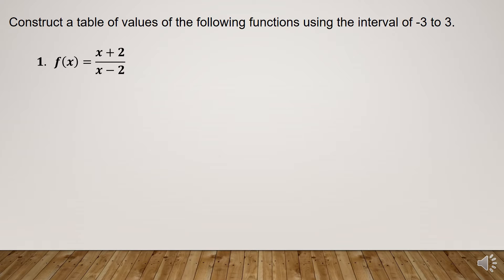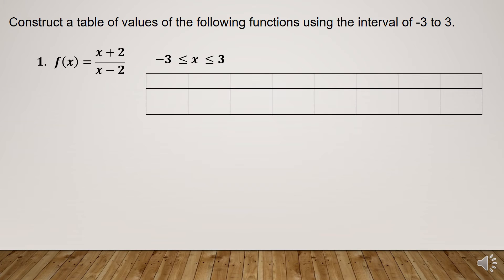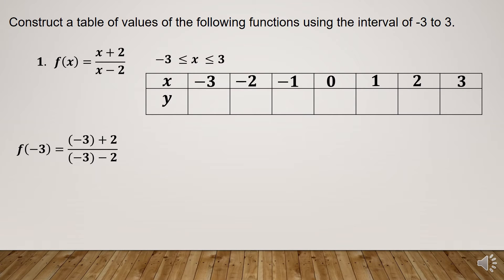Number 1: f of x is equal to x plus 2 all over x minus 2. Since the given interval is from negative 3 to positive 3, let us now create a table of values. In the first column we write x and y. In the first row we write the x values: negative 3, negative 2, negative 1, 0, 1, 2, and positive 3. To find y, we substitute each x value into the function. If x is equal to negative 3, we substitute and simplify: f of negative 3 is equal to 1 over 5.